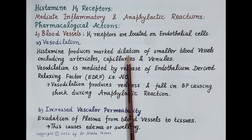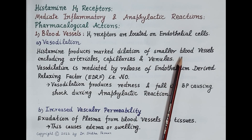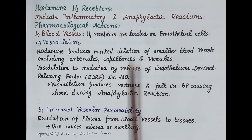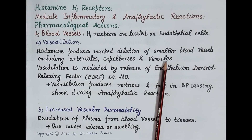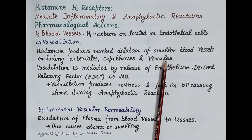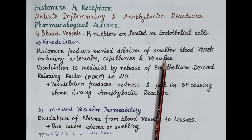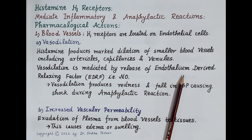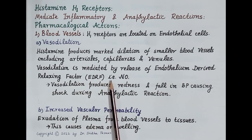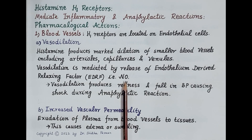Histamine produces marked dilation of smaller blood vessels including arterioles, capillaries, and venules — this is termed vasodilation, meaning an increase in the diameter of blood vessels. Histamine binds to H1 receptors located on the endothelium and mediates release of endothelium-derived relaxing factor, that is nitric oxide, from the endothelium, and this nitric oxide produces vasodilation.